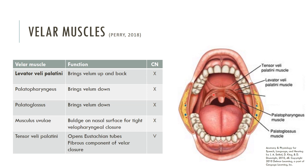Everything else is important for tight velopharyngeal closure. We have the musculus uvulae — that's the muscle in the back; it's not the uvula itself, which is just a piece of tissue. The palatoglossus muscle creates the underside of the sling and helps pull the velum down. The palatopharyngeus is also responsible for pulling the velum down on the lower portion of the sides. Muscles that raise the velum form a U-shape; muscles that bring it down form an upside-down U-shape. The palatopharyngeus attaches to the palate and pharynx, and the palatoglossus attaches to the palate and tongue.